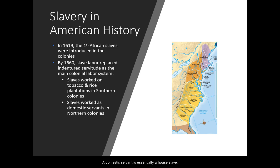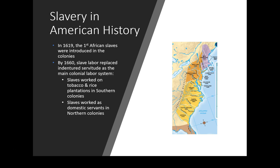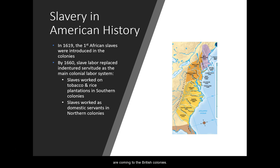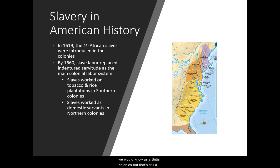A domestic servant is essentially a house slave, a person who works in the house. In the north, it was seen as a status symbol — if you had one or two slaves working in your house, you were high class with prominence in society. Throughout the transatlantic slave trade, not all Africans came to the British colonies. A large majority were sent to Central and South America and the Caribbean. Only about 2 million African slaves were brought to what we know as the British colonies, but that's still a substantial number brought here against their will.